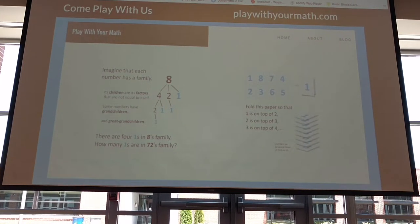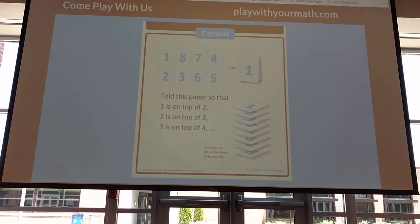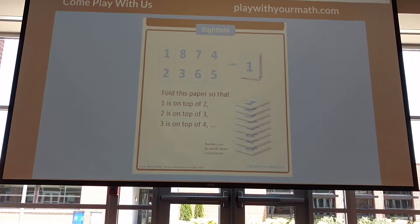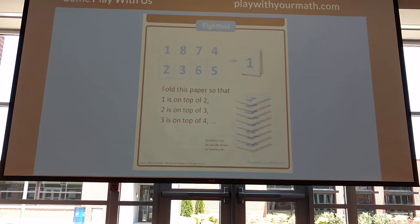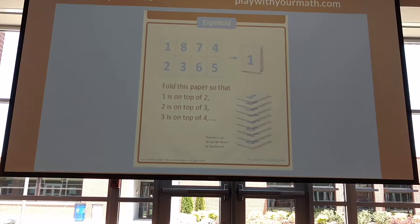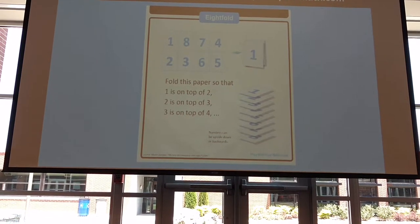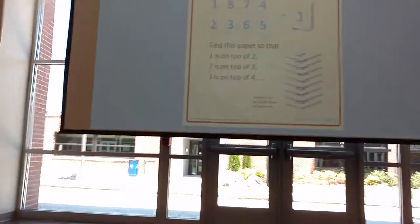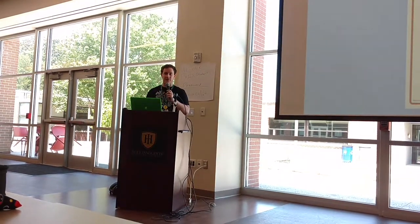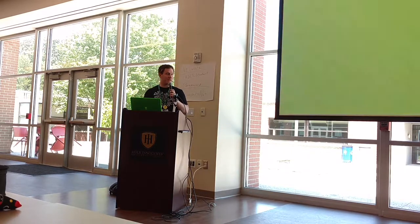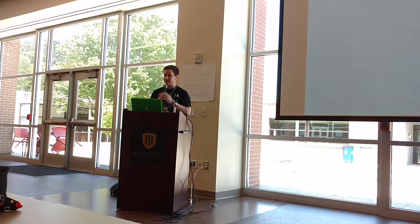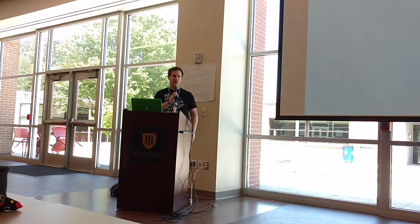In particular, I would like to invite everybody to try problem four, which is called Eightfold. The goal is to fold the piece of paper you have so that the number one is on top of the number two, is on top of the number three, and so on with eight on the bottom. I'm not going to wait for you to finish because I only have five minutes, but if you do figure that out, let me know. I have a handful of copies of the second version, which is a little bit more challenging. You can also find these on the website. Thank you.